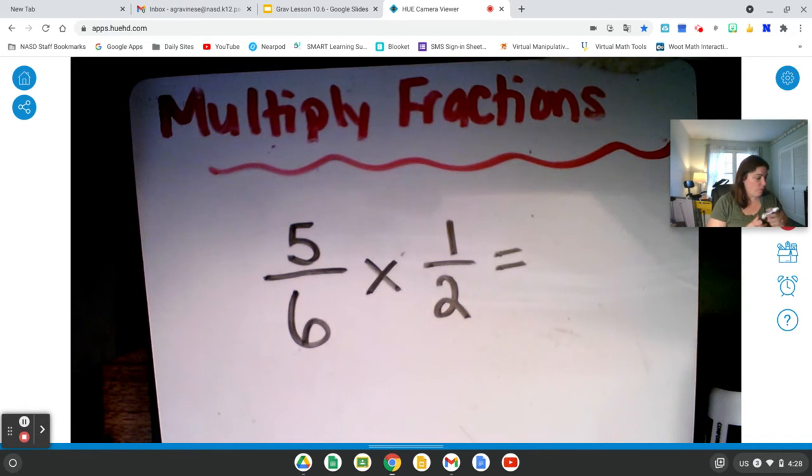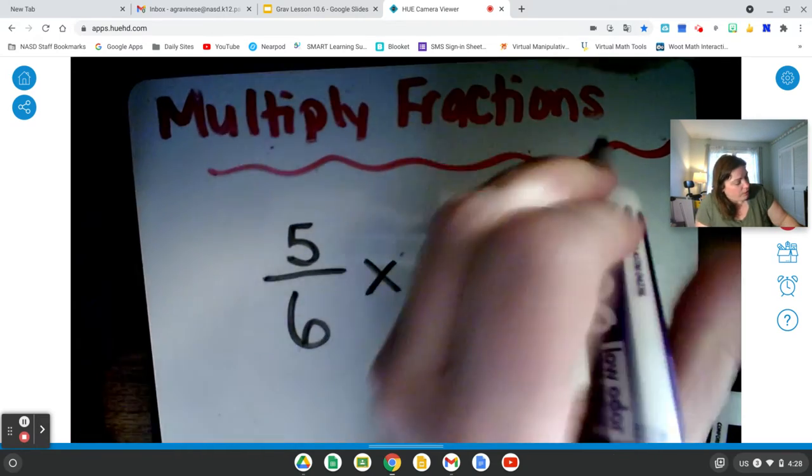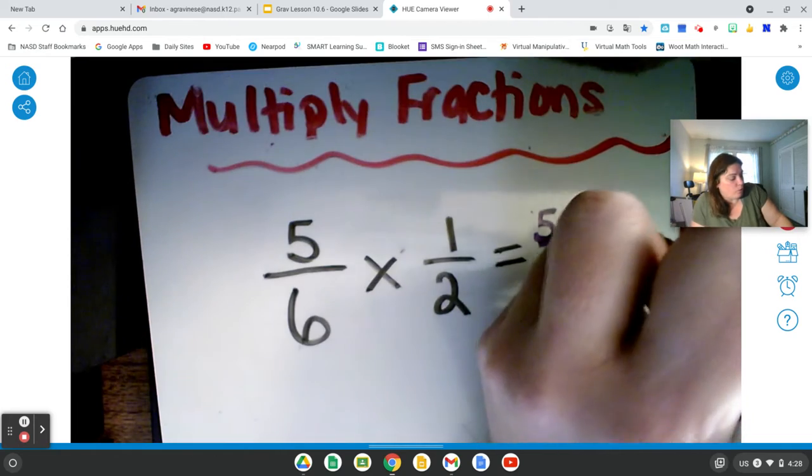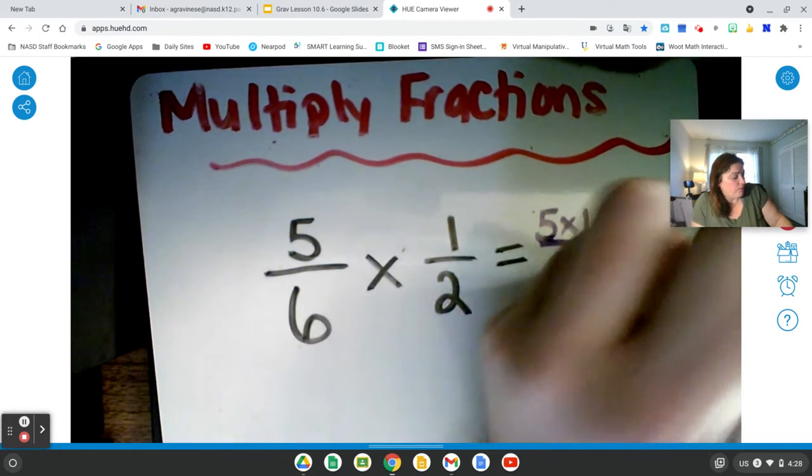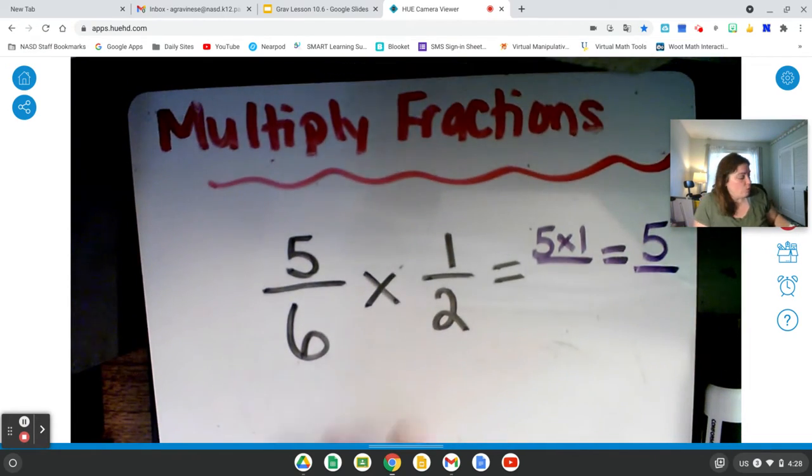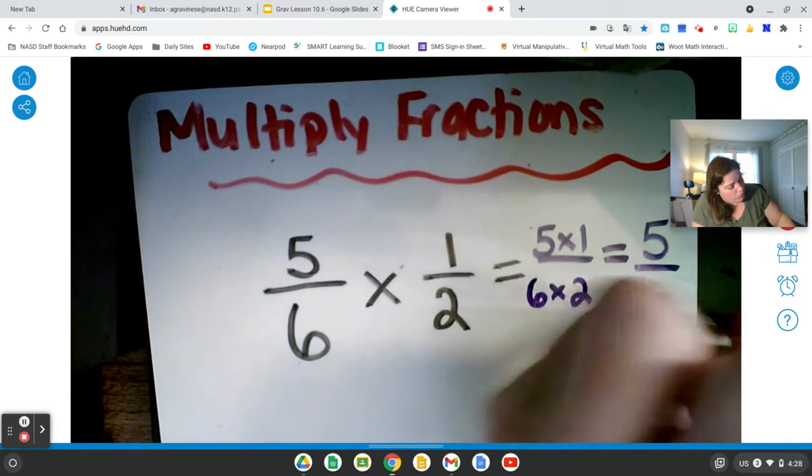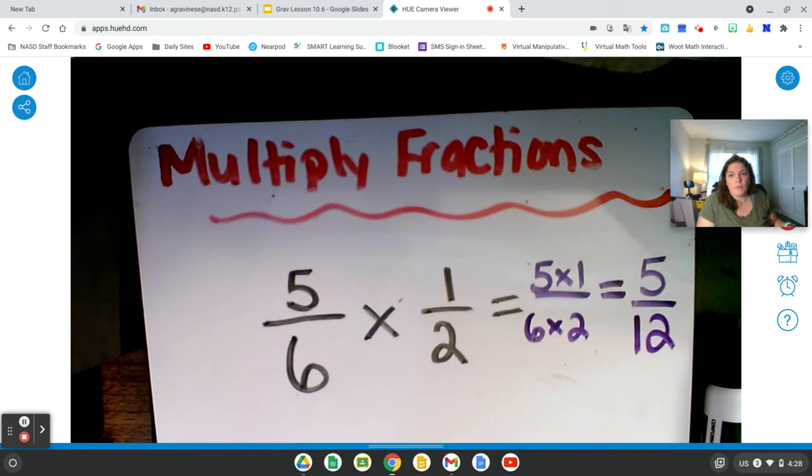So for this example, I'm going to take 5 times 1, my two numerators, and multiply that and get a numerator of 5. And then I'm going to multiply my denominators, 6 times 2. That equals 12. And that is my new denominator.